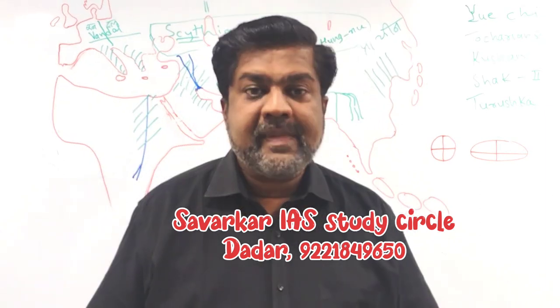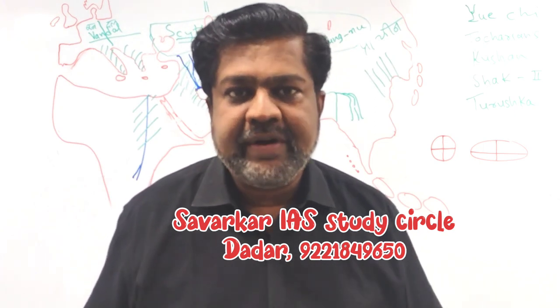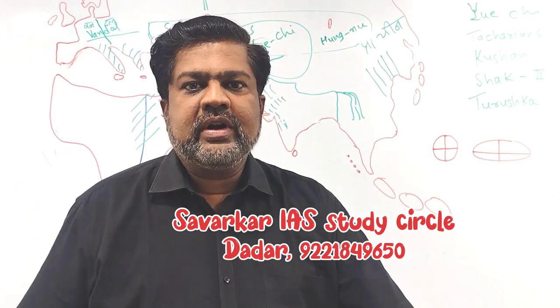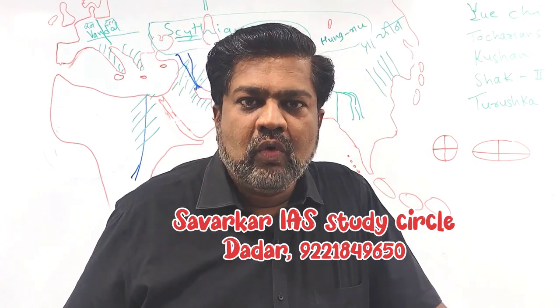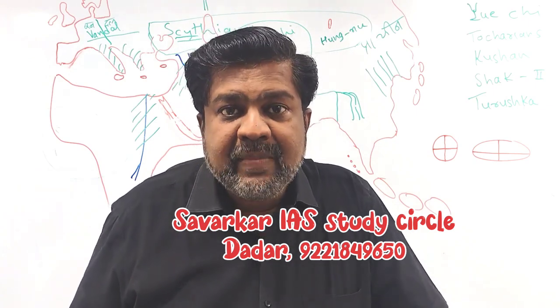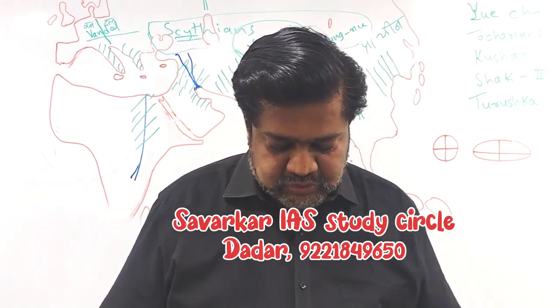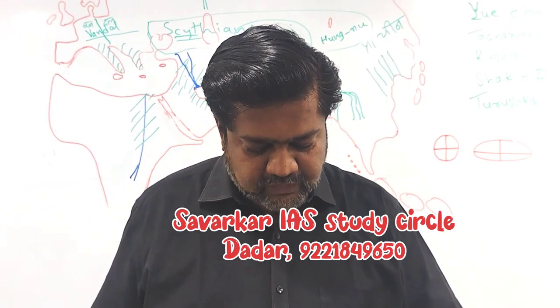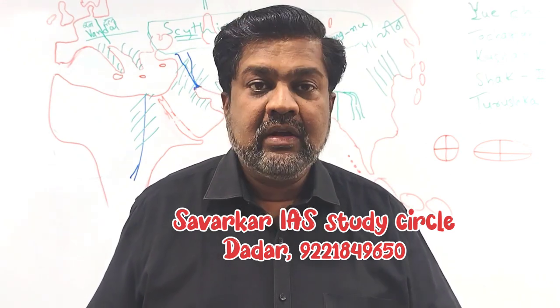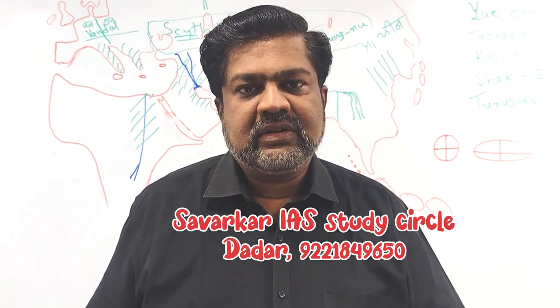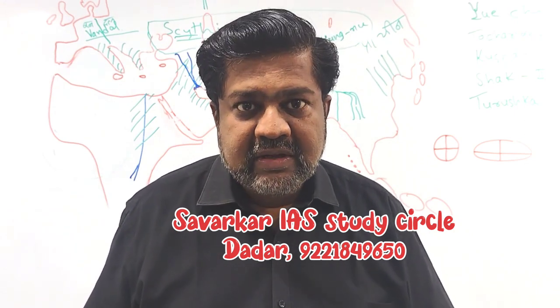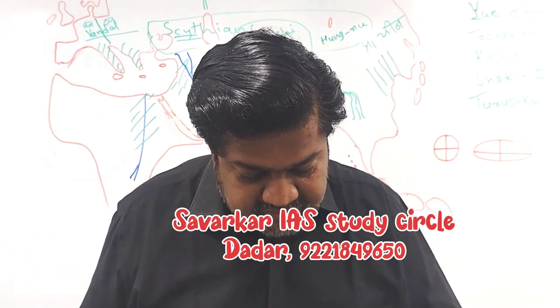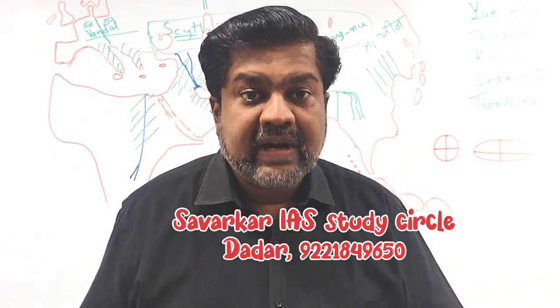Question eleven: members of Rajya Sabha are directly elected by citizens of India — this statement is false. They are elected by citizens but indirectly; a common person does not directly vote for Rajya Sabha members. The Vice President of India is the chairperson of Rajya Sabha — this is true. So the first statement is false and the second is true, meaning the answer is option B.